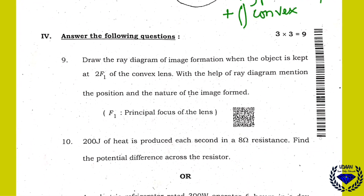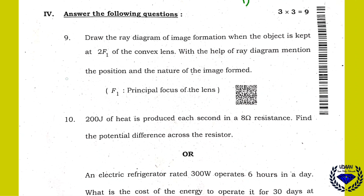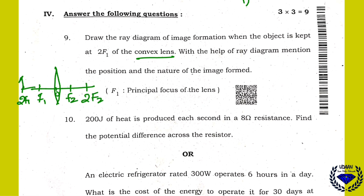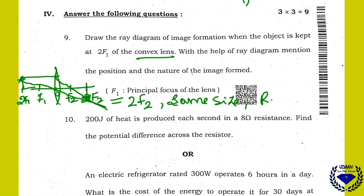You should draw the ray diagram of a convex lens. When the object is kept at 2F1, the ray from the object hits the lens and passes through F2, and directly through the optical center O. The image is formed at 2F2. The image is the same size as the object, and it is real and inverted.